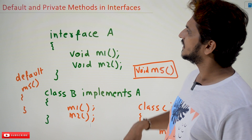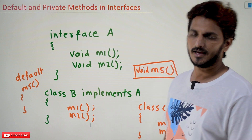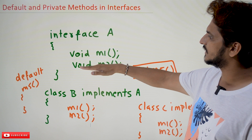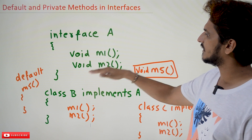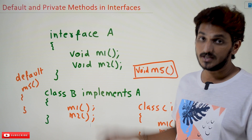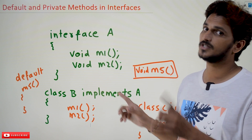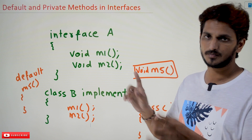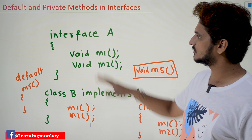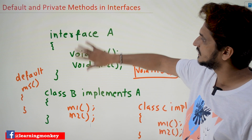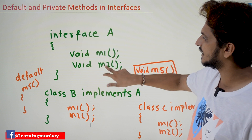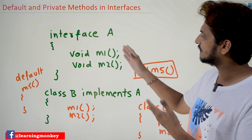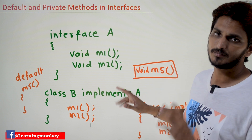So let's assume that we defined an interface A. In this interface, we are having two methods: void M1 and void M2. These two are abstract methods, as we discussed previously in our previous class. In this interface, we have two methods M1 and M2, which are abstract methods — meaning we don't define the body of those methods.